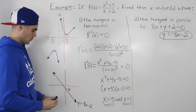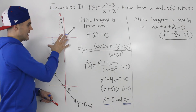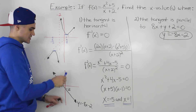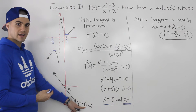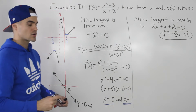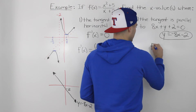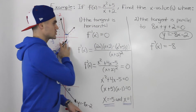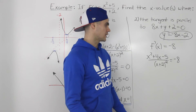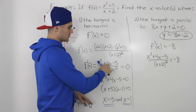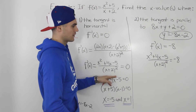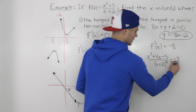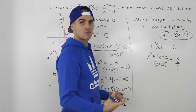We know the derivative gives us the slope of the tangent at any x value. If we're finding x values where the tangent is parallel to this line, the slope of the tangent has to equal negative 8. So we solve when the derivative equals negative 8. Using the derivative from part 1 — x squared plus 4x minus 5 over x plus 2 squared — we set it equal to negative 8 and cross multiply to solve for x.